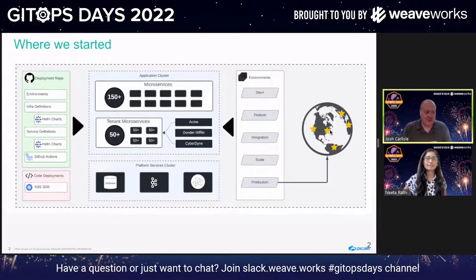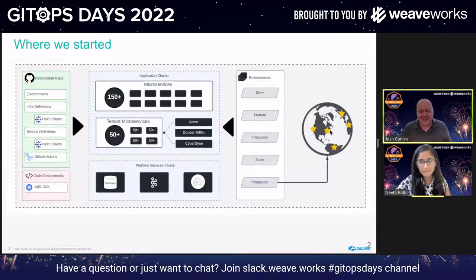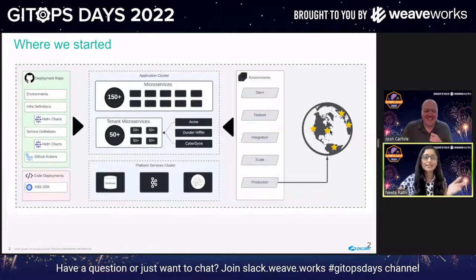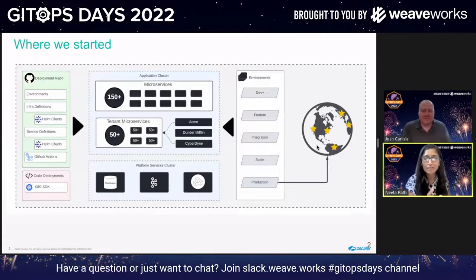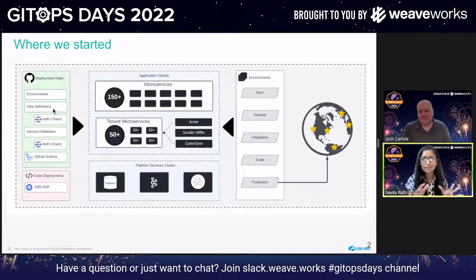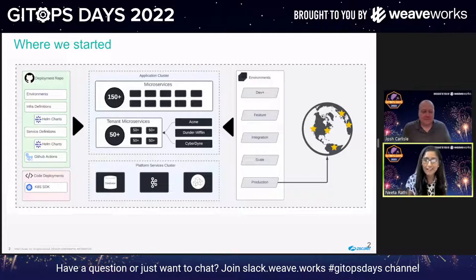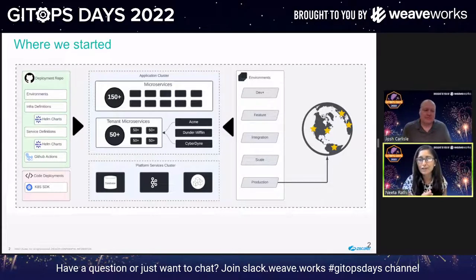That's really how our journey started. As you can see, most of our workloads are Helm charts being deployed into a multi-tenant environment. We were working off a single deployment repository that had everything: environment definitions, microservice definitions, Helm charts, infrastructure definitions. What we had before Flux worked for us, but it wasn't efficient and didn't meet best practices for the cloud-native ecosystem.